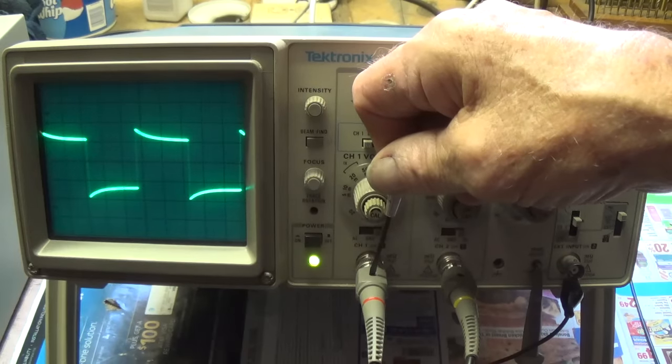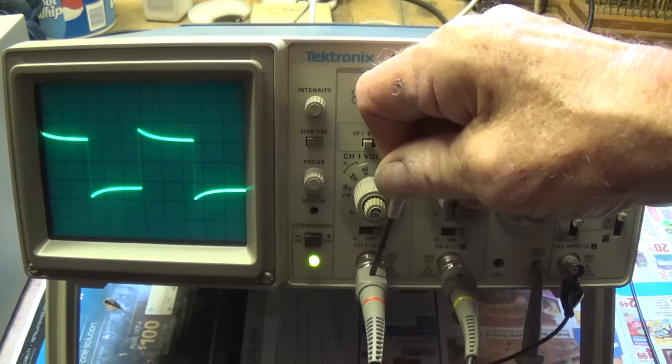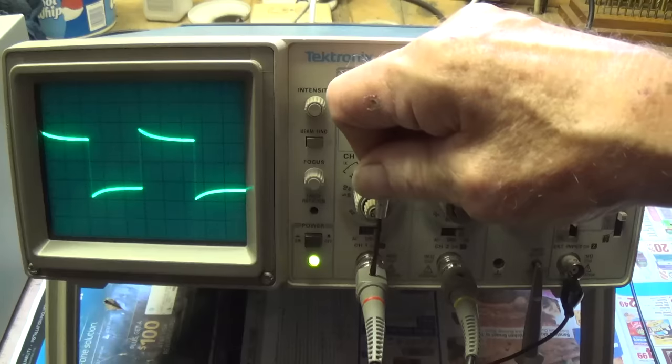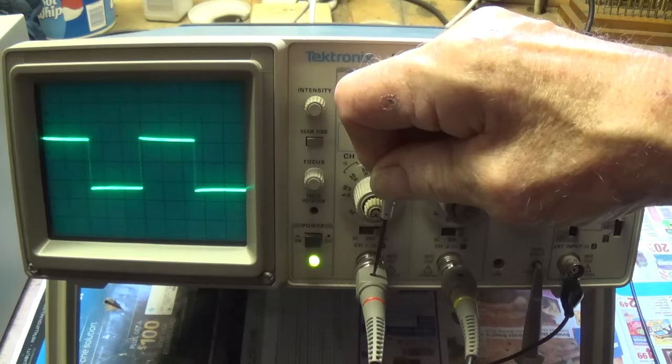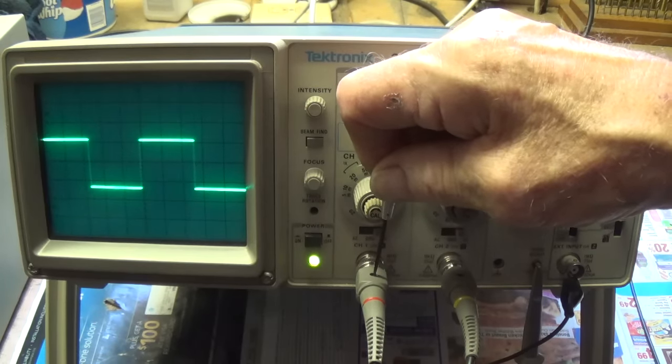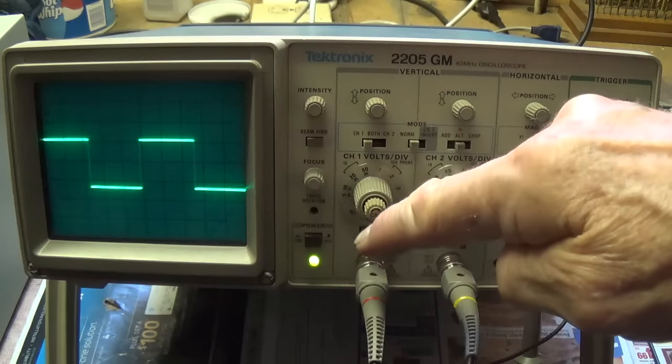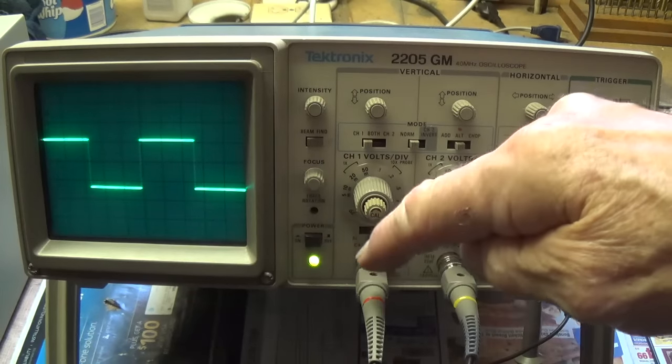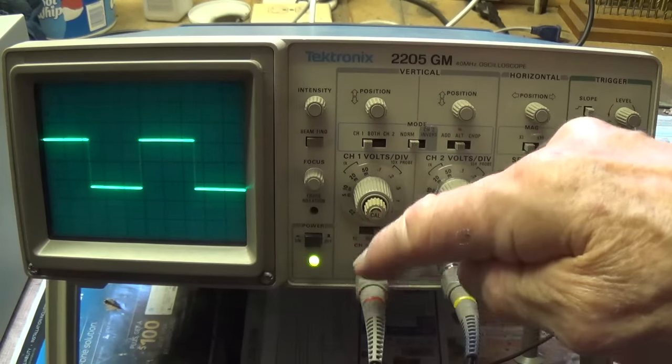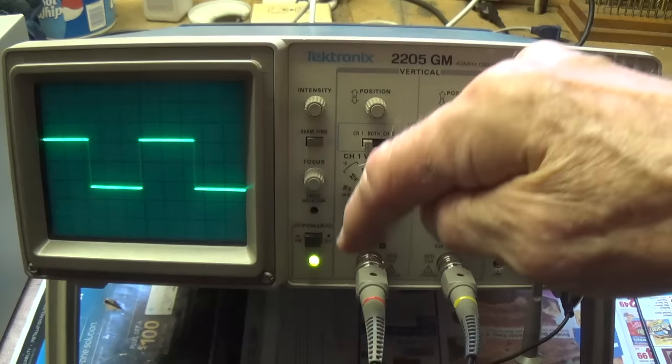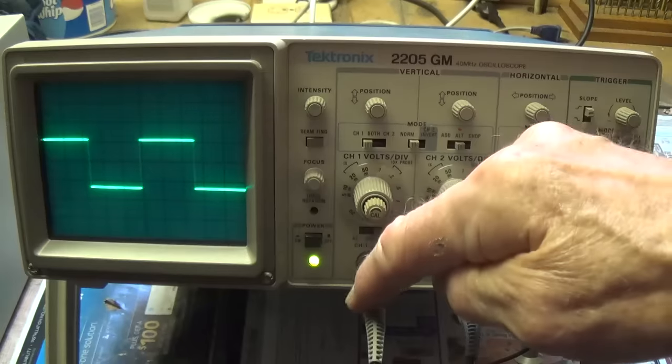But what if your square wave looked like that? Well, as I recall from channel 2, I turn this little screw here until that top is flat, and it's just as square as Abe Lincoln's hat. Okay, so now I have calibrated this probe so that the response then is linear between X1 and X10. Both of my probes are now calibrated.